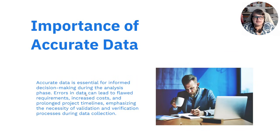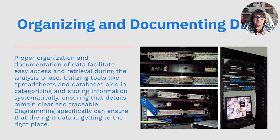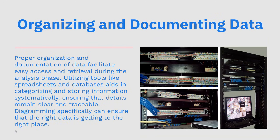The importance of accurate data: when you talk to data analysts about things that are clean and done correctly — like normalized — having accurate data in the system is very important. Accurate data can help them make business decisions; inaccurate data can break the business. Accurate data is essential for informed decision-making during the analysis phase. Errors in data can lead to flawed requirements, increased costs, and prolonged project timelines, emphasizing the necessity of validation and verification processes during data collection. Proper organization and documentation of data facilitate easy access and retrieval. Utilizing tools like spreadsheets and databases aids in categorizing and storing information systematically, ensuring details remain clear and traceable. Diagramming specifically can ensure that the right data is getting to the right place.